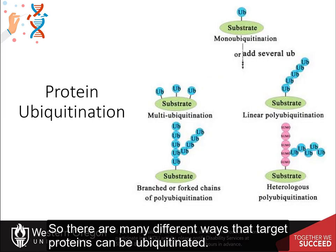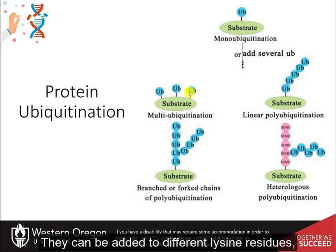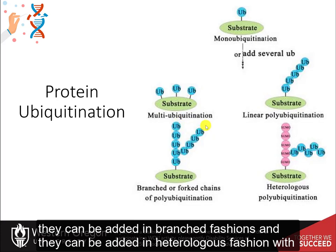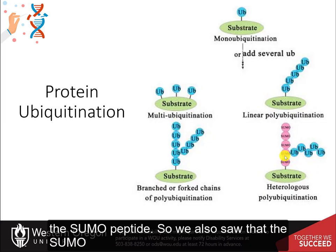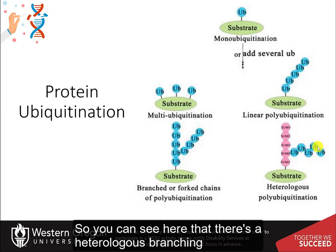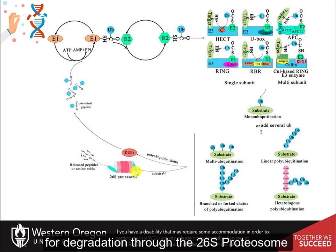There are many different ways that target proteins can be ubiquitinated. They could have a single ubiquitin group added and be monoubiquitinated, or several ubiquitins can be added onto the substrate. They can be added to different lysine residues, in a long chain, in branched fashions, or in heterologous fashion with the SUMO peptide. These polyubiquitinated products are often then targeted for degradation through the 26S proteasome.